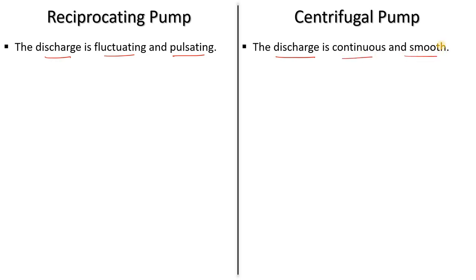Why is reciprocating pump discharge fluctuating? In the reciprocating pump, first you expand the boundary — liquid comes in — and the discharge does not go out. Then when you compress, the suction valve closes and discharge valve opens. So the discharge is not continuous — it fluctuates, and pulsation is created on the discharge side.